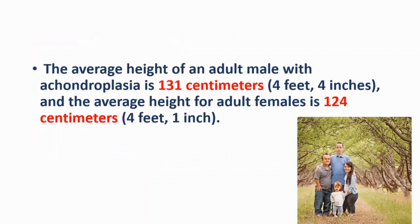The average height for an adult male with achondroplasia is 131 cm and the average height for adult females is 124 cm.